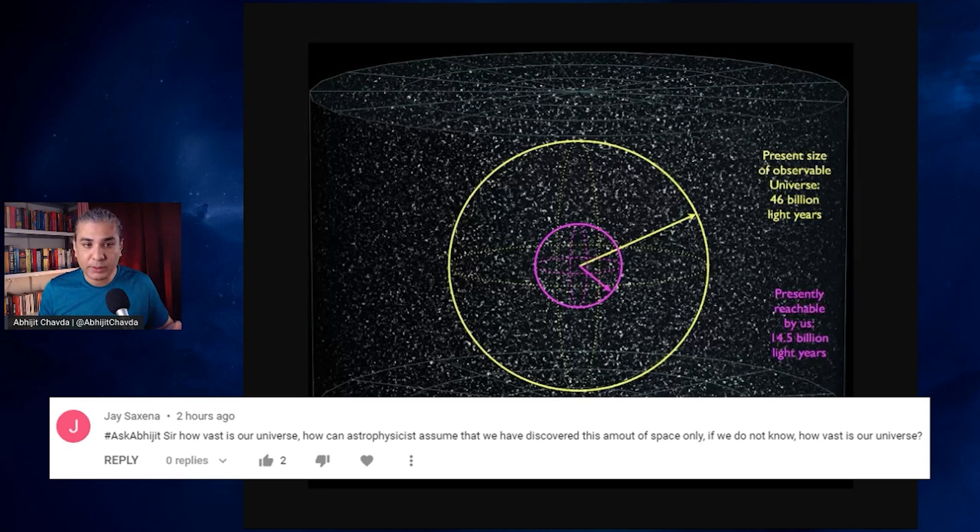So we know that the cosmic horizon, the observable horizon, the size of the observable universe is about 46 billion light years in diameter. It's a sphere of radius 46 billion light years.